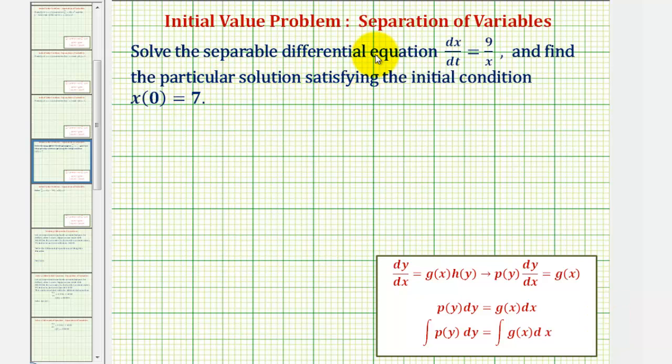We want to solve the separable differential equation dx/dt equals 9 divided by x and find the particular solution satisfying the initial condition x(0) = 7.